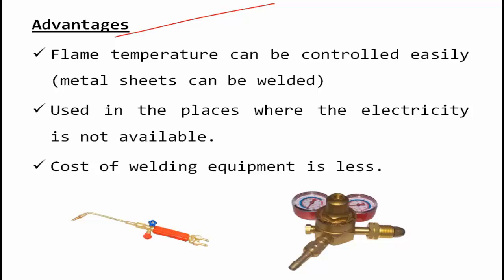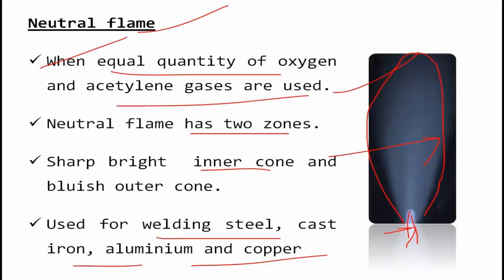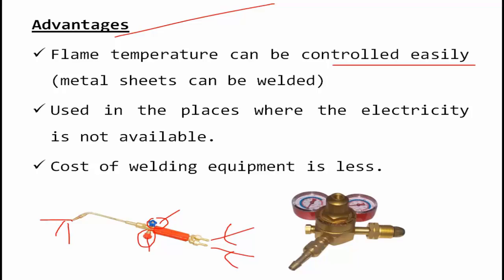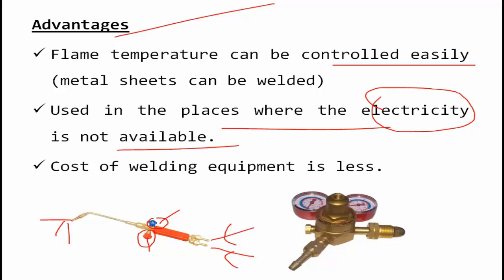The advantages of gas welding: flame temperature can be controlled. Two knobs are provided — one for acetylene gas and one for oxygen — connected through hoses to the torch. We can adjust how much gas is needed to get the desired flame: neutral, carburizing, or oxidizing. Also, it can be used in places where electricity is not available, as no power source is required throughout the welding process.